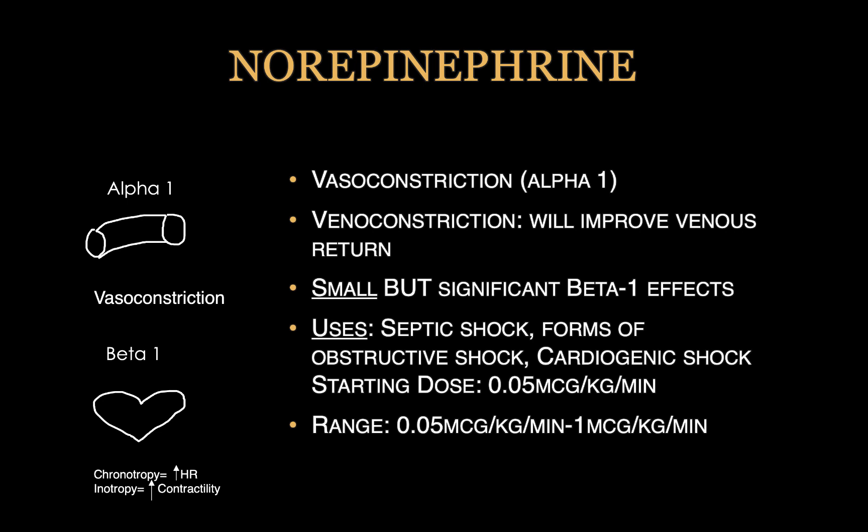The first drug we're going to talk about is norepinephrine. This is probably the most widely used vasoactive medication. It works predominantly on alpha-1, so it causes vasoconstriction. But it also has small but significant beta-1 effects, so it can increase heart rate and contractility. Most people think about arteriolar vasoconstriction, but probably as important, if not more important, is the fact that norepinephrine and probably other vasoconstrictors work on venoconstriction. Most of our blood sits in the venous system, so if we can increase venous tone, we increase venous return, stroke volume, and therefore cardiac output.